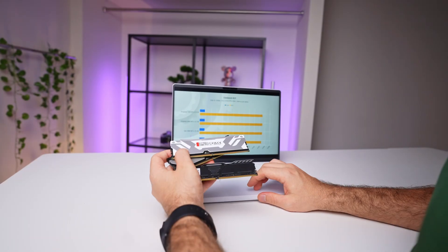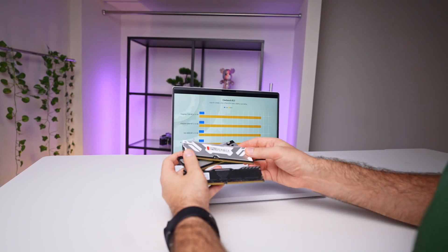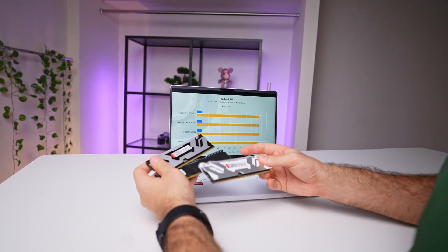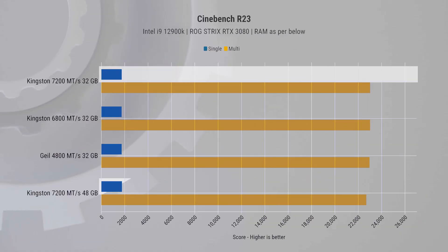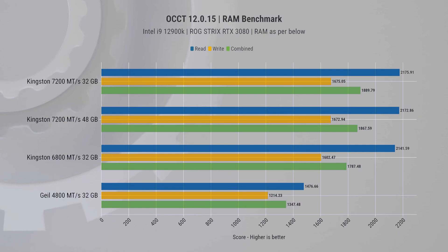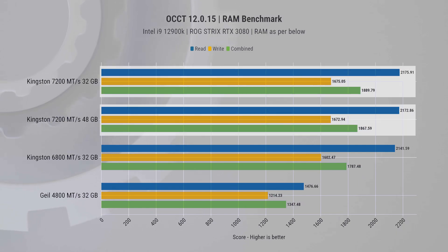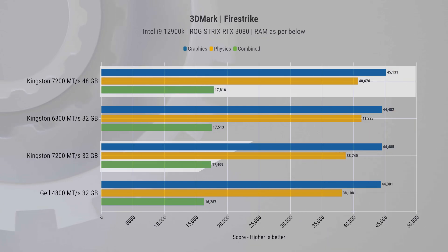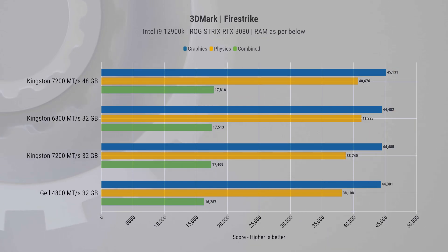I really wish I could tell you we were taken aback by the results, but the reality is actually super boring in a good way — the two different sets of memory are not really that different at all and perform within the margin of error. In Cinebench R23, single-core scores are less than one percent apart and multi-core scores are about 1.4 percent apart. The synthetic OCCT test shows almost identical results, and Fire Strike as well as Time Spy Extreme are also marginal.